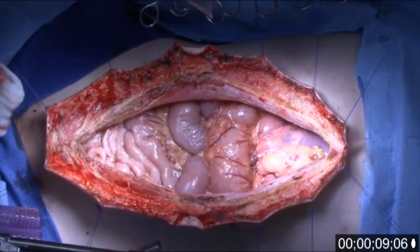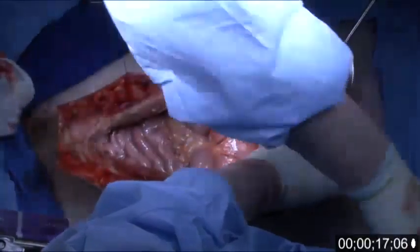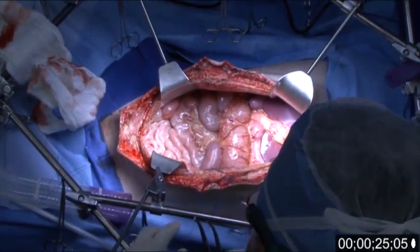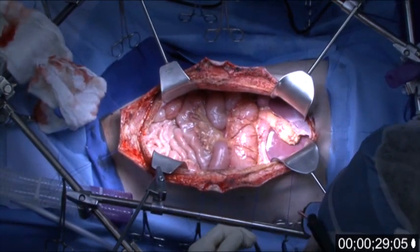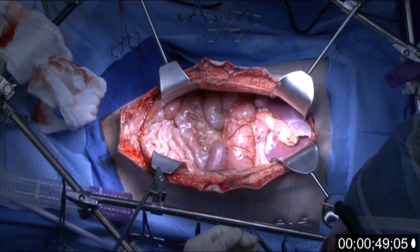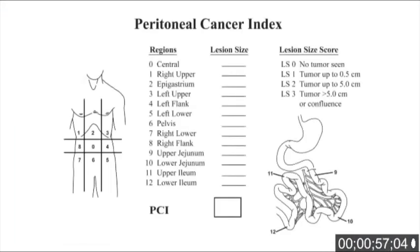Using a retraction system fixed to the operating table for exposure, all four quadrants of the abdomen plus the pelvis can be visually inspected. The two major divisions of the peritoneal cavity are the supramesocolic and inframesocolic compartments, separated by the transverse colon. The abdominal exploration starts in the right upper quadrant and will proceed in a clockwise direction around the abdomen and pelvis. The distribution and extent of cancer nodules will be recorded on a diagram of the peritoneal cancer index.